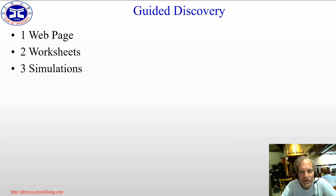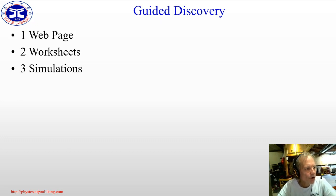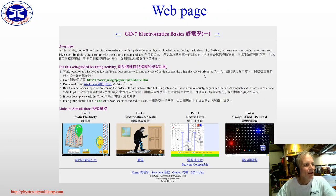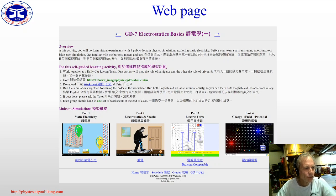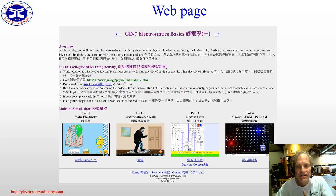I want to focus on the guided discovery, because that's been our main emphasis and where we've spent development time. It involves three aspects: a webpage, worksheets, and simulations. The webpage basically introduces students to the activity, tells them how they're going to do it, gives them a link to download the worksheet, and also gives them links to all the PHET simulations they will be using. At the end of class, each group hands in one set of guided worksheets.